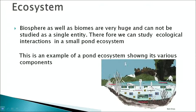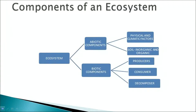This is an example of a pond ecosystem showing its various components. The components of an ecosystem can be divided into two: abiotic components and biotic components. The abiotic components include physical and climatic factors, soil, and inorganic and organic matter. The biotic components are producers, consumers and decomposers.